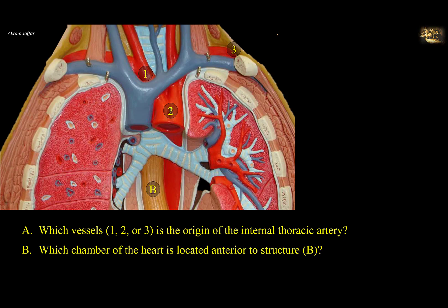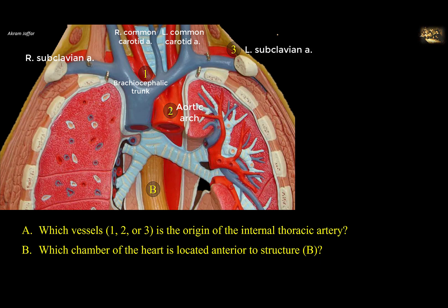Which vessel — 1, 2, or 3 — is the origin of the internal thoracic artery? Which chamber of the heart is located anterior to structure B? In this plastic model, 2 is the arch of the aorta, giving its first branch the brachiocephalic trunk, which divides into the right common carotid and right subclavian artery. The other branches arising from the arch of the aorta are the left common carotid and the left subclavian artery, which is 3. The internal thoracic arteries pass on either side of the sternum, vertically down, and they are branches of the subclavian artery.